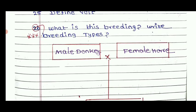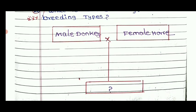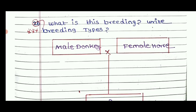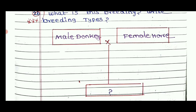What is this breeding method? Write the breeding types. For inbreeding — male donkey and female horse cross — what is this breeding type? We will repeat questions about science because we expect questions from the reduced syllabus. We will talk about the interior questions and the reduced syllabus scope.